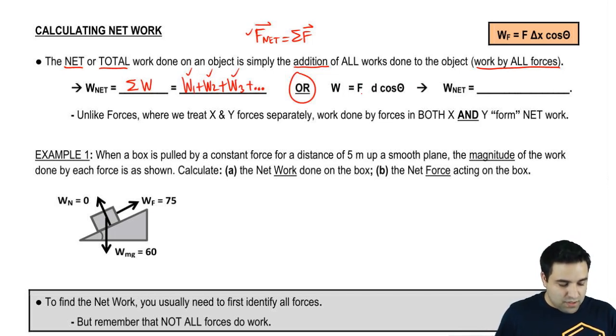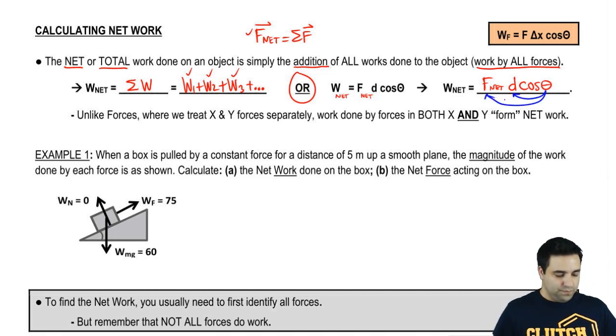So the work done by the net force is the net work. Instead, I can just find the net force and multiply it by d cosine of theta. Theta is still the angle between your displacement and your net force. So depending on what you have, you're going to use one or the other.